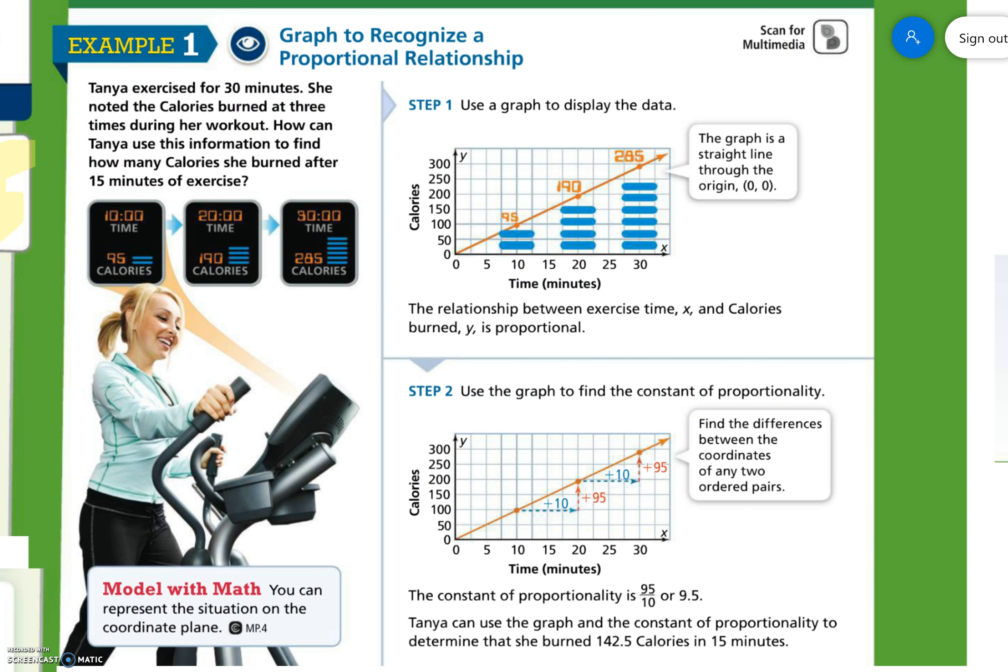Example 1, graph to recognize a proportional relationship. Tonya exercised for 30 minutes. She noted the calories burned at 3 times during her workout. How could Tonya use this information to find how many calories she burned after 15 minutes?